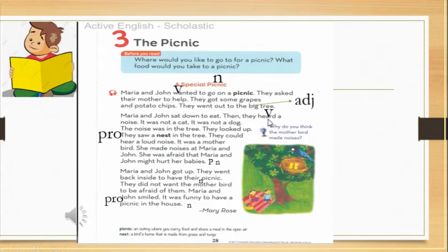They looked up. They saw a nest in the tree. They could hear a loud noise. It was a mother bird. She was afraid that Maria and Joan might hurt her babies. Not a dog, not a cat. A mother bird - the mother was afraid John and Maria would hurt the baby birds.